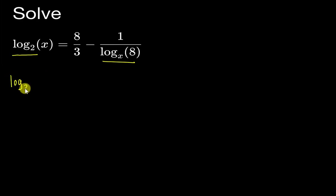So over here I should have log₂(x) plus 1 over log_x(8) equals to 8 over 3. Then I try to make them have the same base first, then later I'll see if I need to use the substitution method or if I can just easily factorize.